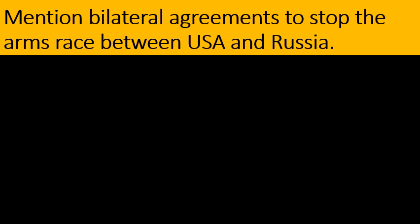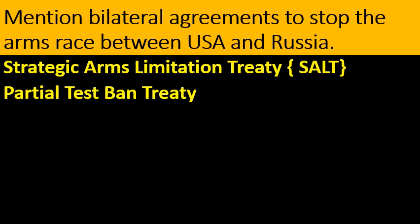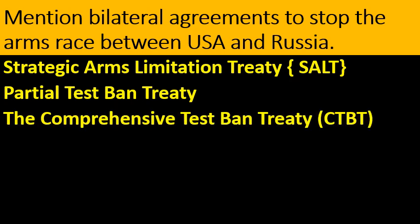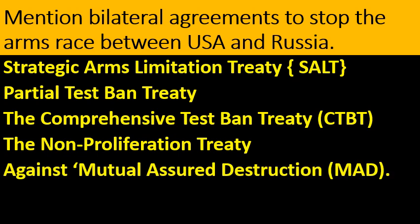Mention bilateral agreements to stop the arms race between the USA and Russia: Strategic Arms Limitation Treaty, Partial Test Ban Treaty, Comprehensive Test Ban Treaty, Non-Proliferation Treaty, and Mutual Assured Destruction.